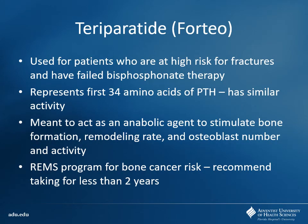Another drug is teriparatide or Forteo — used as a backup when patients are failing bisphosphonates and have high fracture risk. It contains the first 34 amino acids of PTH, so it looks like a chunk of PTH, which you'd think wouldn't be beneficial. However, it actually acts as a stimulant for bone, increasing osteoblast activity. The concern is that with all this increased osteoblast activity, those cells could replicate too much — leading to potential bone cancer. There's actually a REMS program for this drug because of that nasty side effect. So it's not preferred, probably a second or third-line agent.